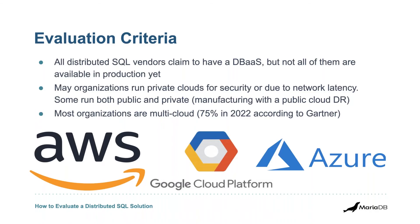Evaluation criteria: all distributed SQL vendors claim to have a DBaaS, but not all are available in production yet. Many organizations run private clouds for security or due to network latency. Some run both public and private, and most organizations are multi-cloud. You want to look at: does this vendor have real customers in production? Can they run on your private cloud? Can they run on both public and private? Can you replicate between, say, GCP and AWS, or a private cloud and GCP? Most organizations are multi-cloud and that's probably going to expand rather than contract.